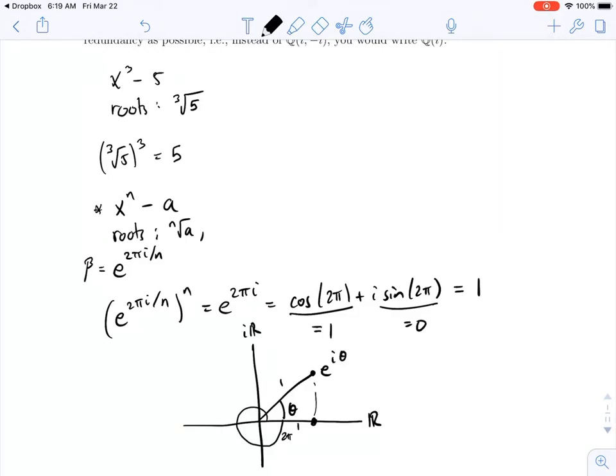So, I claim all of the other roots are going to look like take nth root of a, multiply it by beta, and then take the nth root of a, and multiply it by beta squared. So, why is this working?